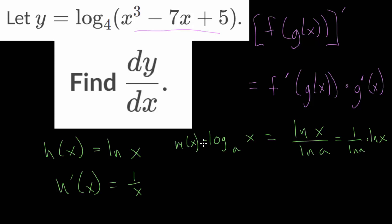And when we take its derivative, we have a constant. So that will just carry along. We have 1 over the natural log of a, multiplied by the derivative of the natural log function, which we know is 1 over x.